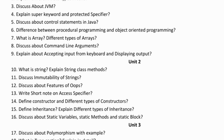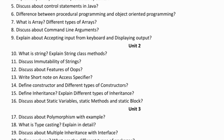In the second unit, the important questions are: what is a string and explain about string class methods. Eleventh question: discuss about immutability of strings. Twelfth question: discuss about features of OOPs — abstraction, encapsulation, inheritance, polymorphism, class, and object.